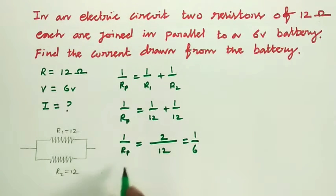So 1 by Rp is equal to 1 by 6. Therefore, resistor in parallel connection, the value is 6.